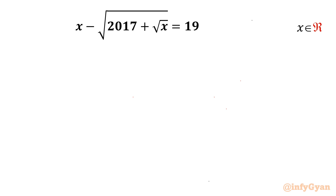Welcome back to Infigyan friends. In this video we are going to take up another challenging and very interesting radical equation problem. It is x minus square root of (2017 plus square root x) equal to 19, and we have to find out real solutions only.